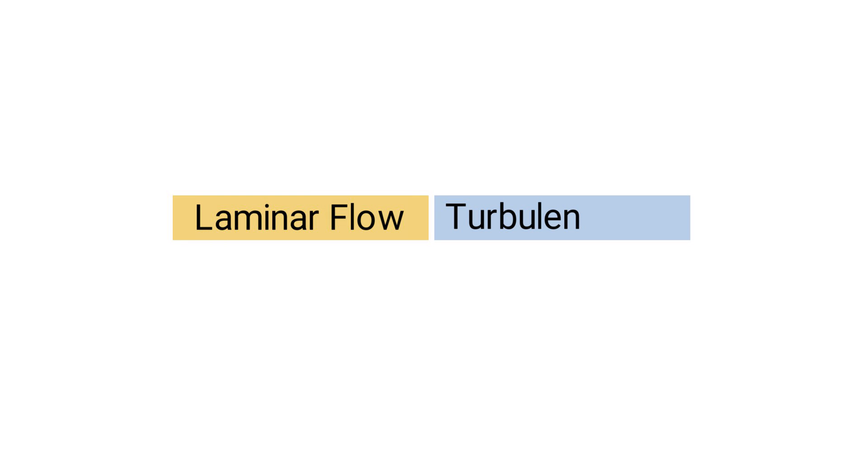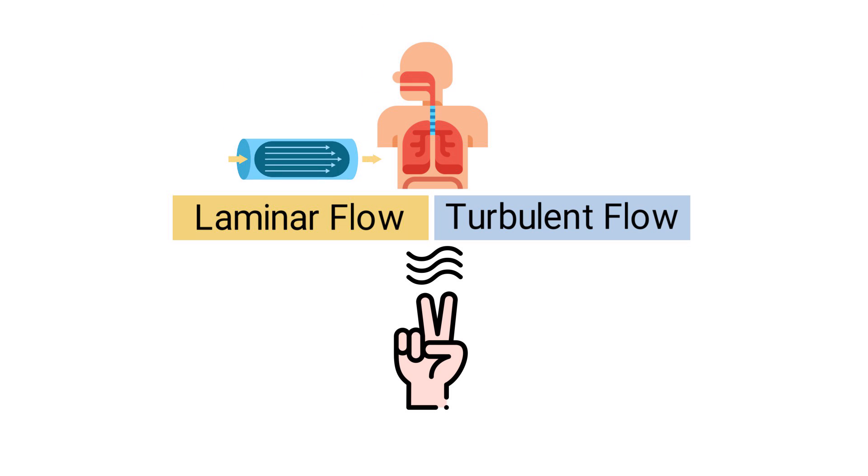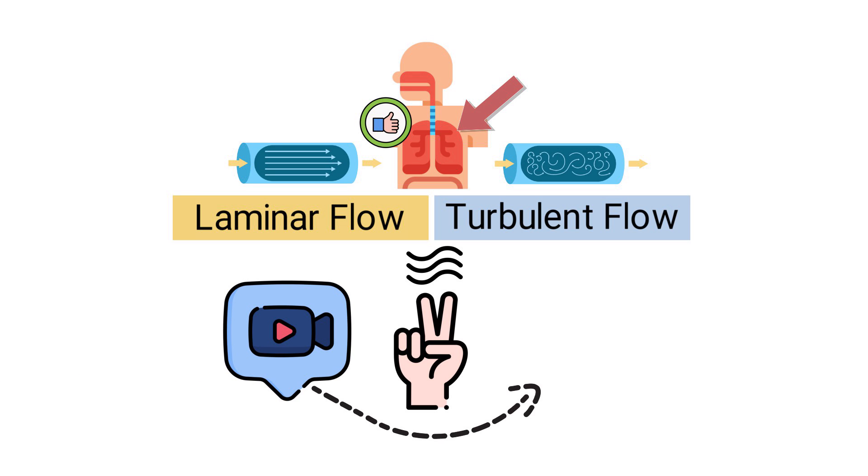Laminar and turbulent flow are two different types of airflow that occur in various parts of the human respiratory system, each with distinct characteristics and implications for lung functions. This video explains the differences between the two in a simplified way.